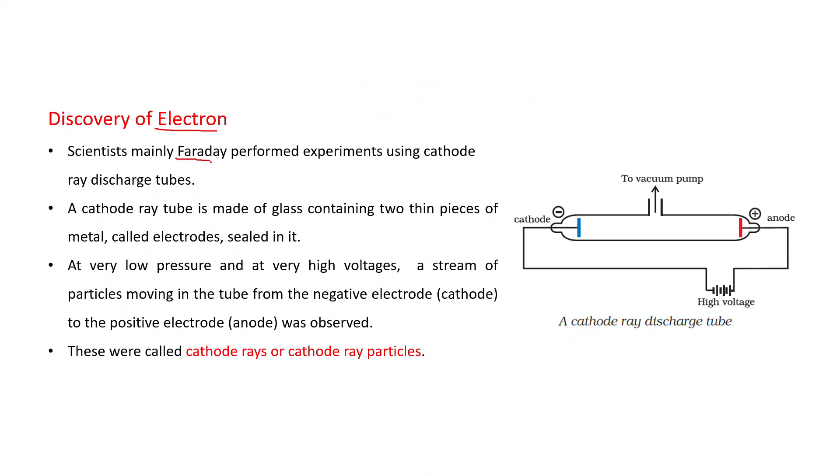Scientists, mainly Faraday, performed experiments using cathode ray discharge tubes. A cathode ray tube is made of glass containing two thin pieces of metal called electrodes sealed in it. You can see this diagram. This is a cathode ray discharge tube.